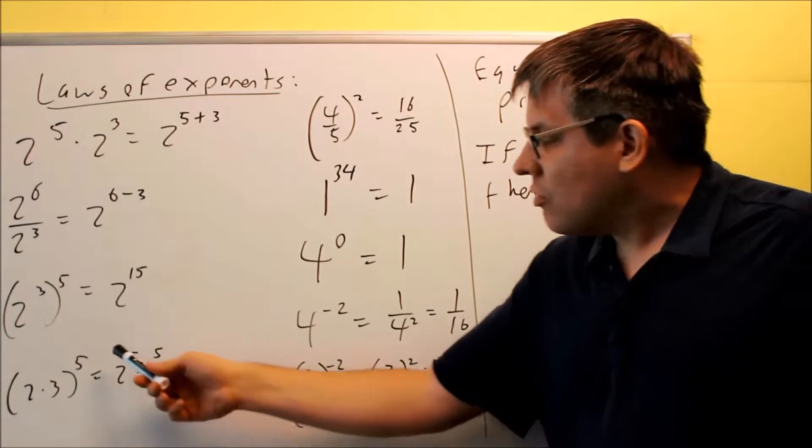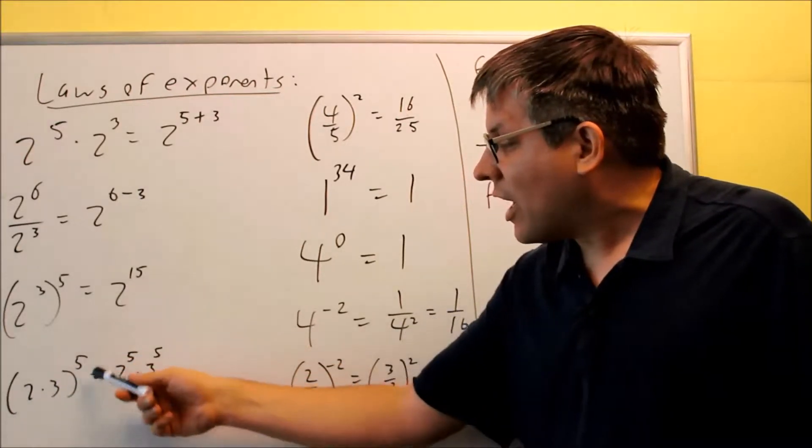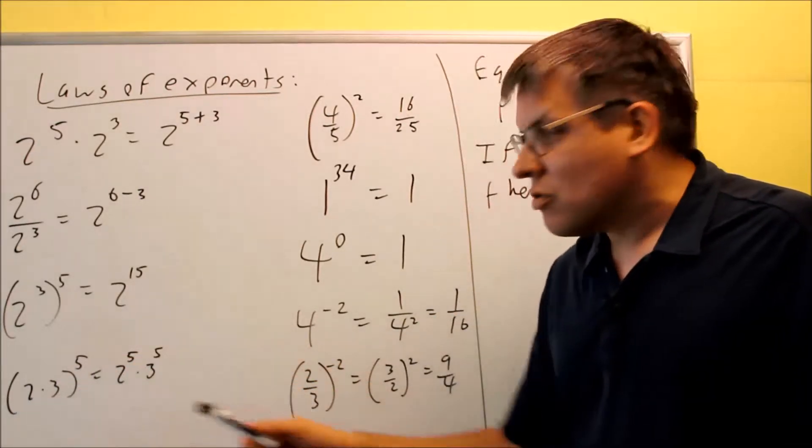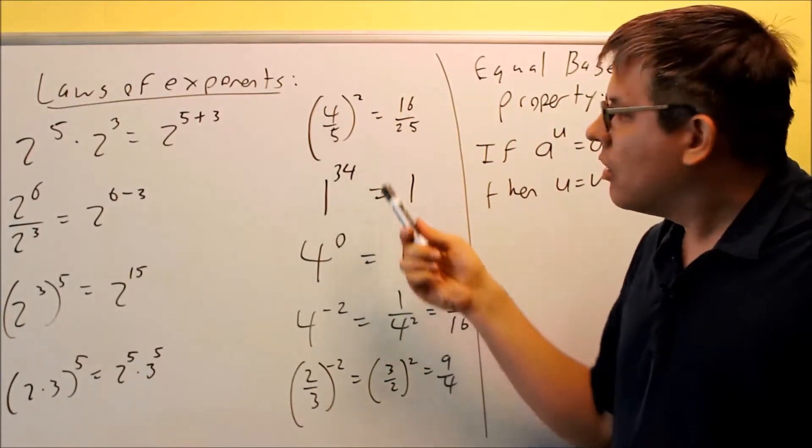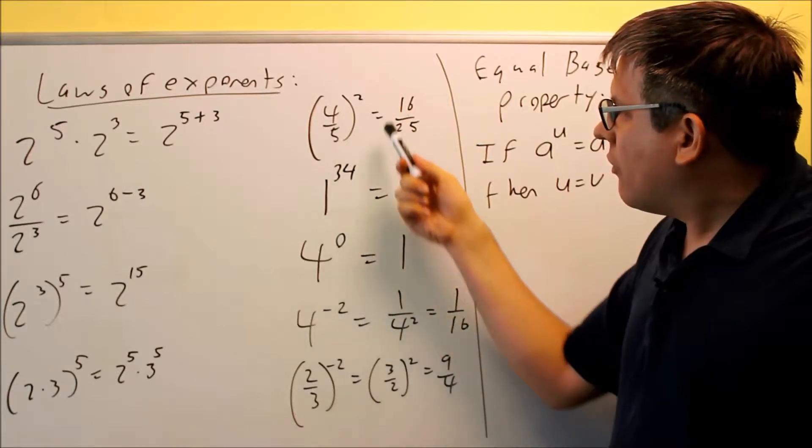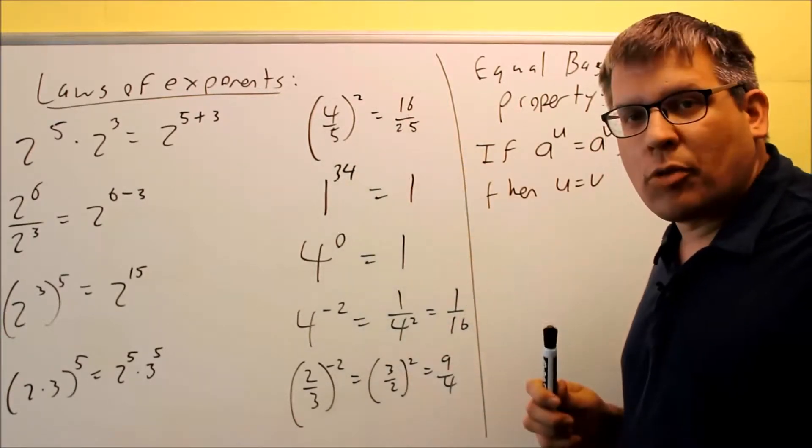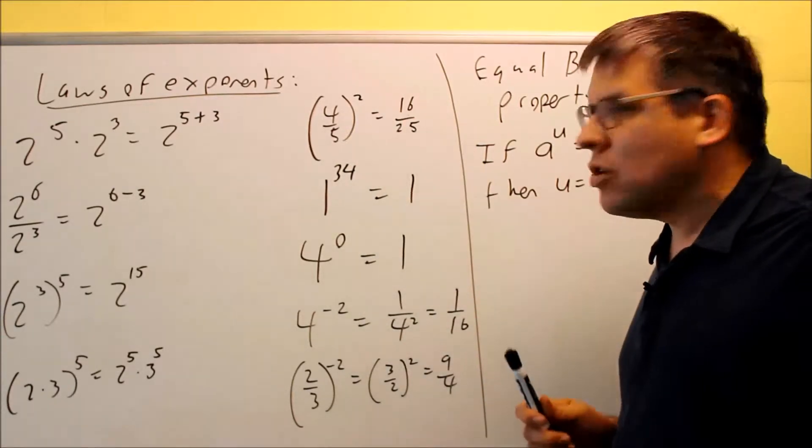Next one is you're allowed to distribute the 5 into each of these. So you have 2 to the 5th times 3 to the 5th. Likewise, you can do it with division as well. If you have 4 over something, and the whole thing is squared, you can square the top number and square the bottom number. You get 16 over 25.